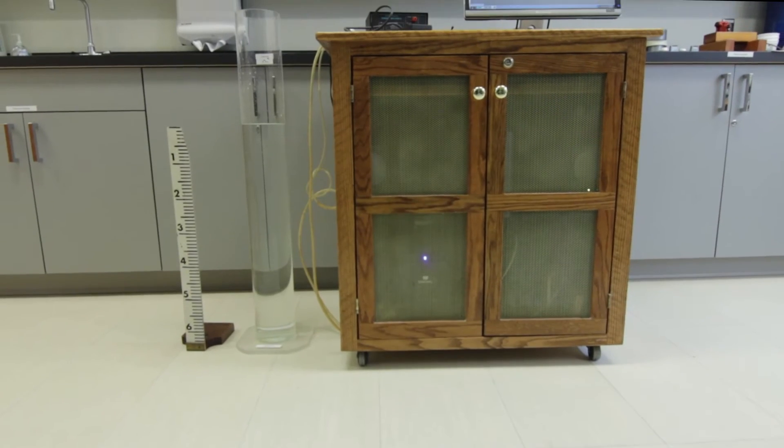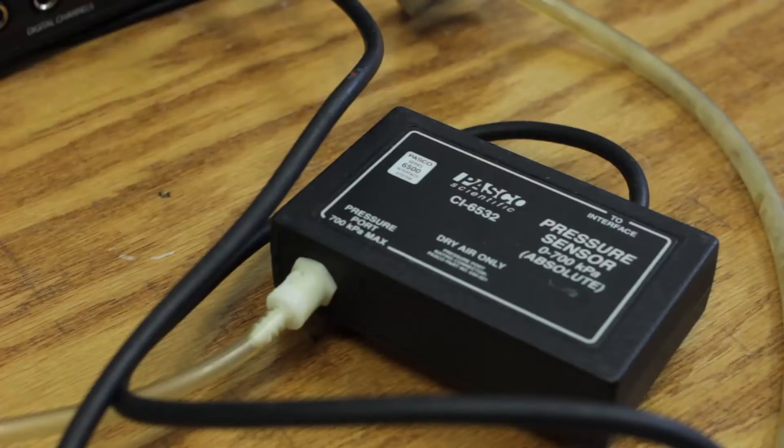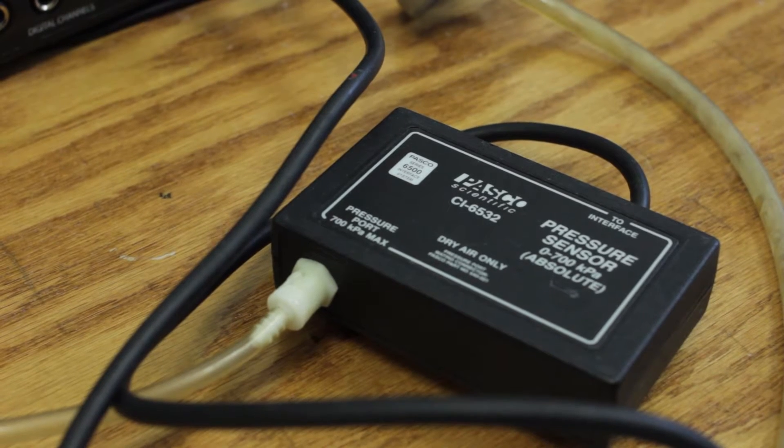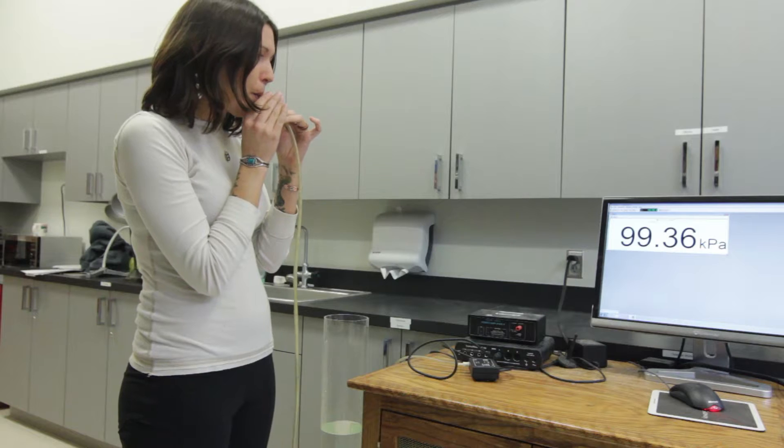The apparatus shown allows us to measure pressure and display hydrostatic equilibrium. A pressure sensor, which feeds information to the computer, displays the pressure value near the end of the tube. One can easily demonstrate a pressure increase.